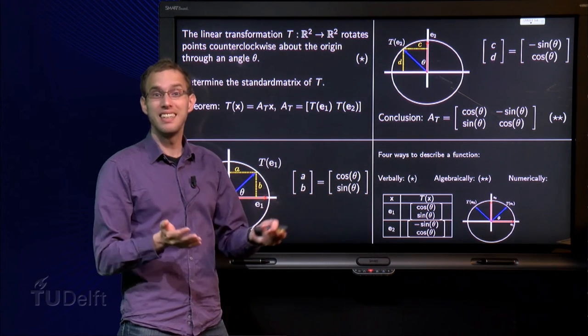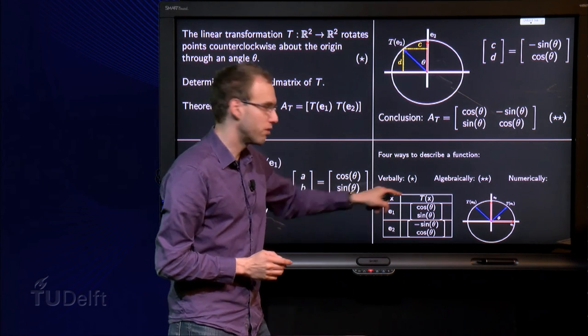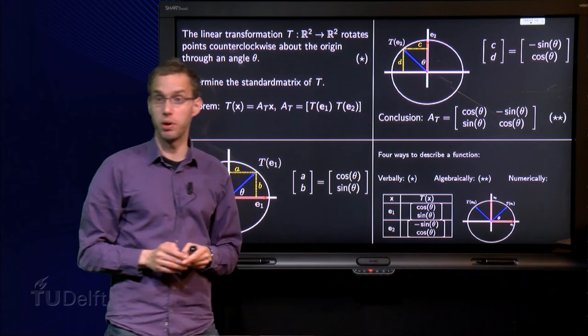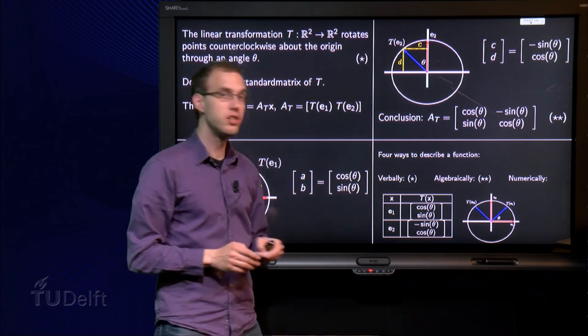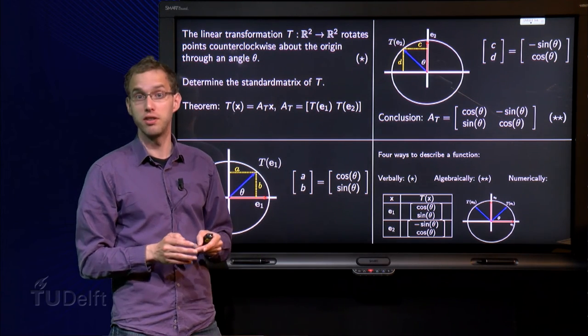Numerically, by making a table of input and output values, so x and T(x) as columns of a table—x's e₁ and e₂, and T(x)'s. This is not a very nice way to summarize the transformation.